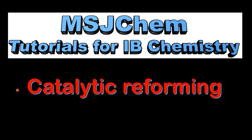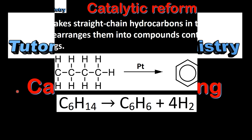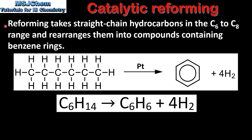This is MSJChem. In this video I'll be looking at catalytic reforming. Reforming takes straight chain hydrocarbons in the C6 to C8 range and rearranges them into compounds containing benzene rings.